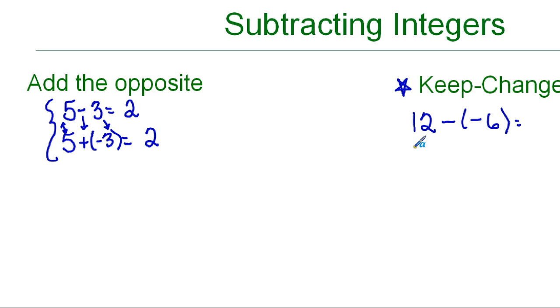I'm going to keep 12 the same, change my minus to a plus, change the sign of this number to its opposite. Right now it's negative, so I'm going to change it to positive. And this becomes 12 plus 6, which is 18. If this answer is 18, then this answer is also 18. Because, remember, we can rewrite our subtraction as addition, adding the opposite.